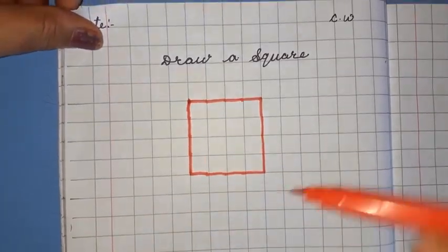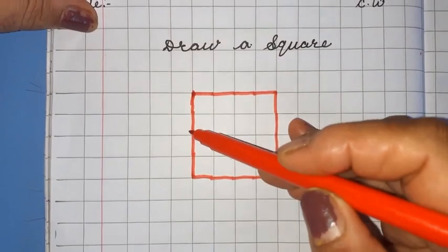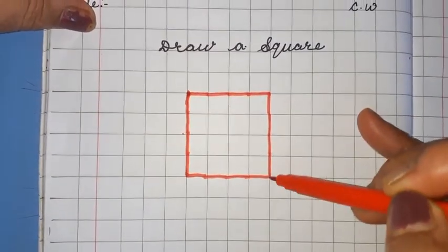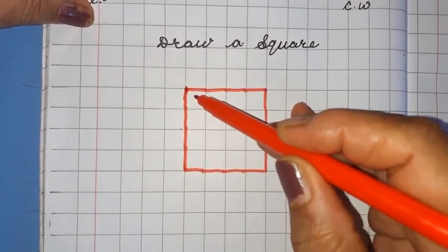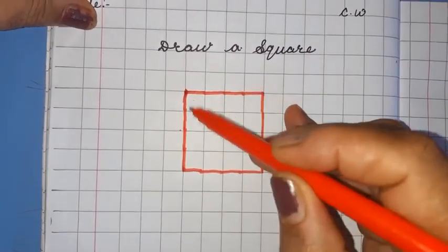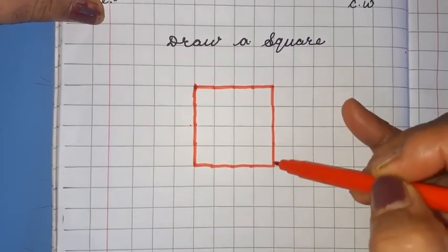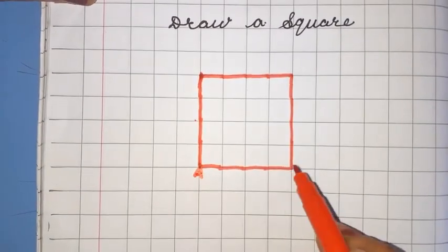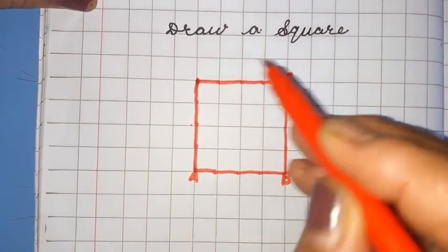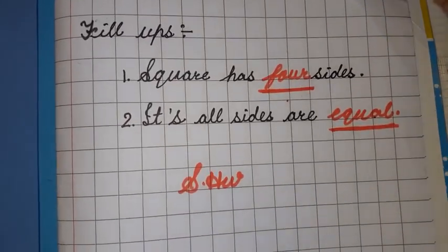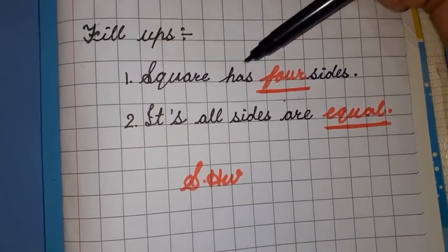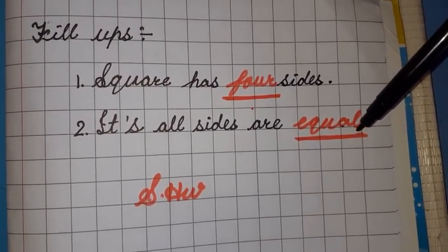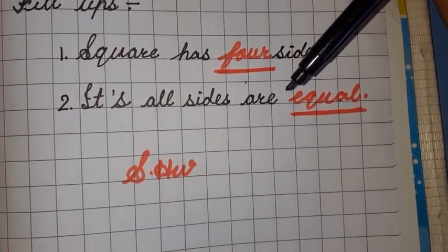The square has four sides — one, two, three, and four — and all four sides are equal in size. Counting from each side: one, two, three, four boxes — all are equal. The square also has four corners: one, two, three, and four. We name the corners A, B, C, and D. Remember: square has four sides, and all its sides are equal. Learn it properly — it may come in the exam.